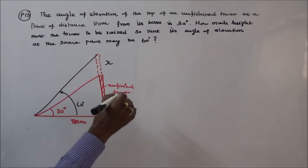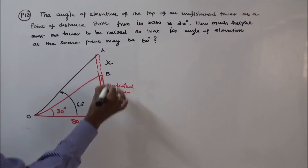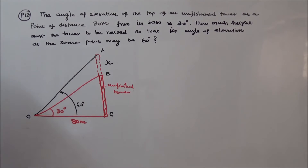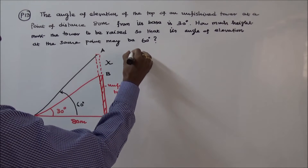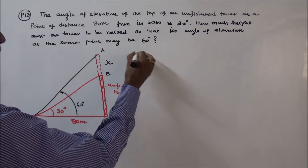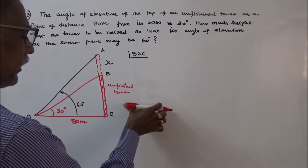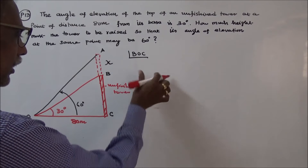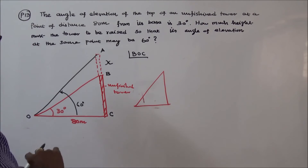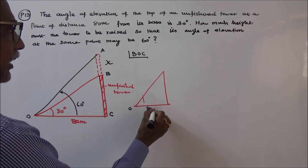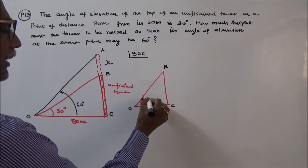So there are two triangles. Let me label the points: this is O, this is A, this is B, this is C. First I take triangle OBC — that is the first triangle. This is O, this is 80 meters, this is B, this is C. This angle is 30 degrees.